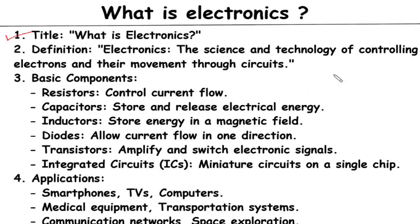So, let's dive right in. Definition of Electronics: at its core, electronics refers to the branch of science and technology that deals with the behavior and control of electrons and their movement through various materials. It involves the study, design, and application of electrical circuits and devices that manipulate electrical currents and voltages to perform specific tasks.